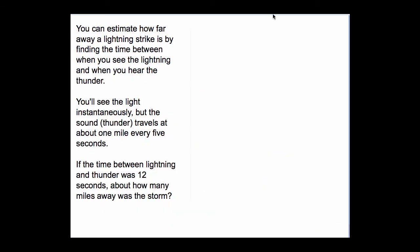You can estimate how far away a lightning strike is by finding the time between when you see the lightning and when you hear the thunder. You'll see the light instantaneously, but the sound, the thunder, travels at about one mile every five seconds.